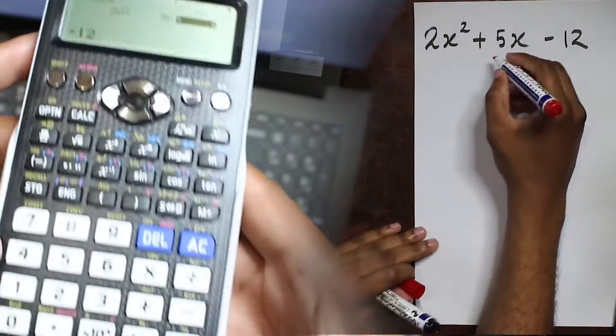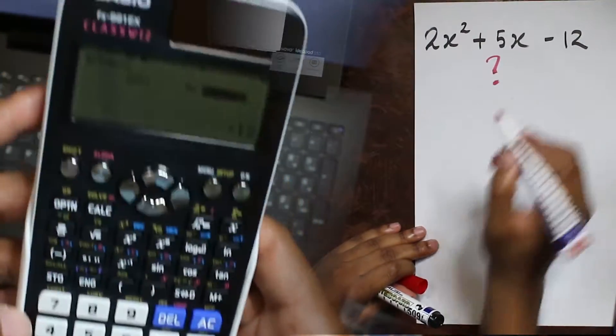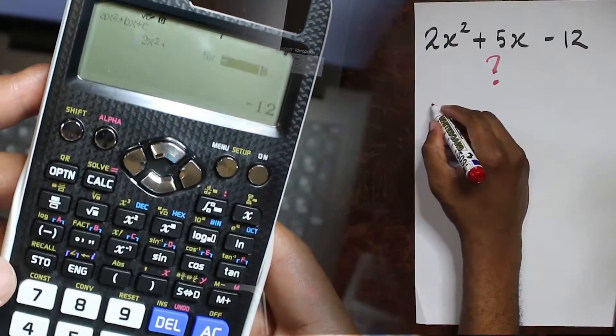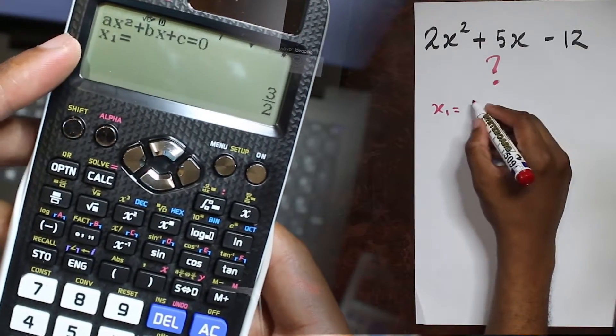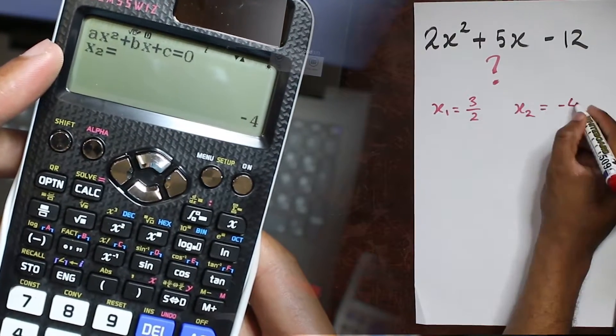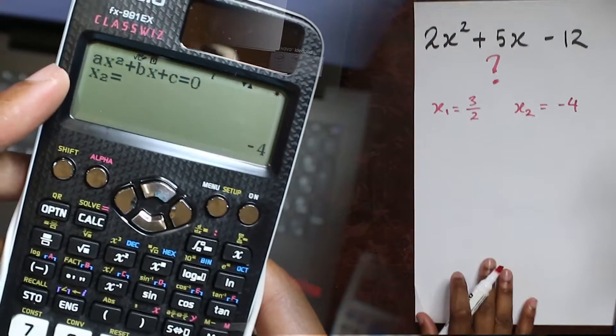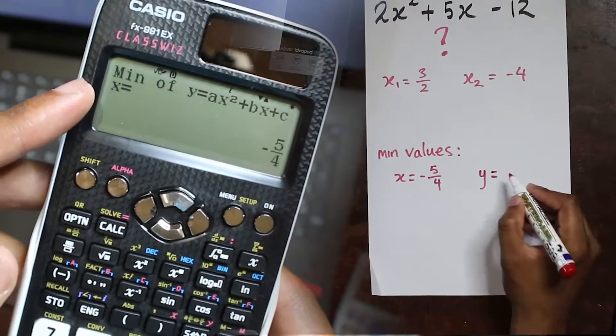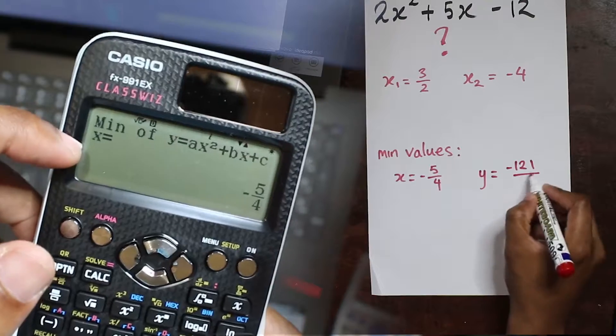Every time I want to put it in I press equal as like enter. When I press enter for the final time, boom, there I have x1 is 3 over 2, x2 is negative 4.